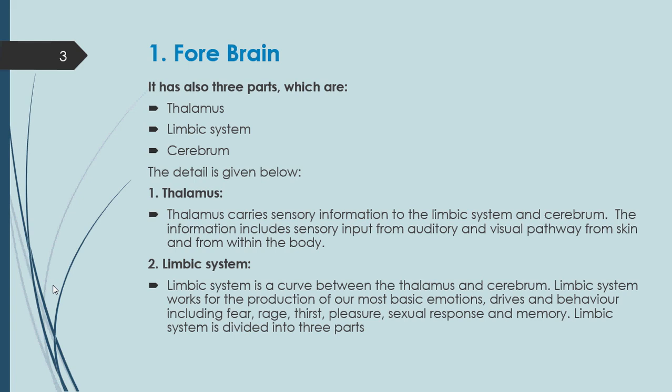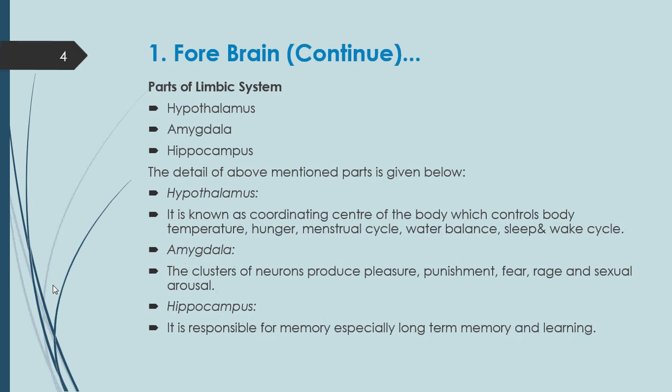The limbic system is further divided into three more parts. Looking at the slide, the parts of the limbic system are: number one — hypothalamus, number two — amygdala, number three — hippocampus. Now let's discuss the detail of these three parts.